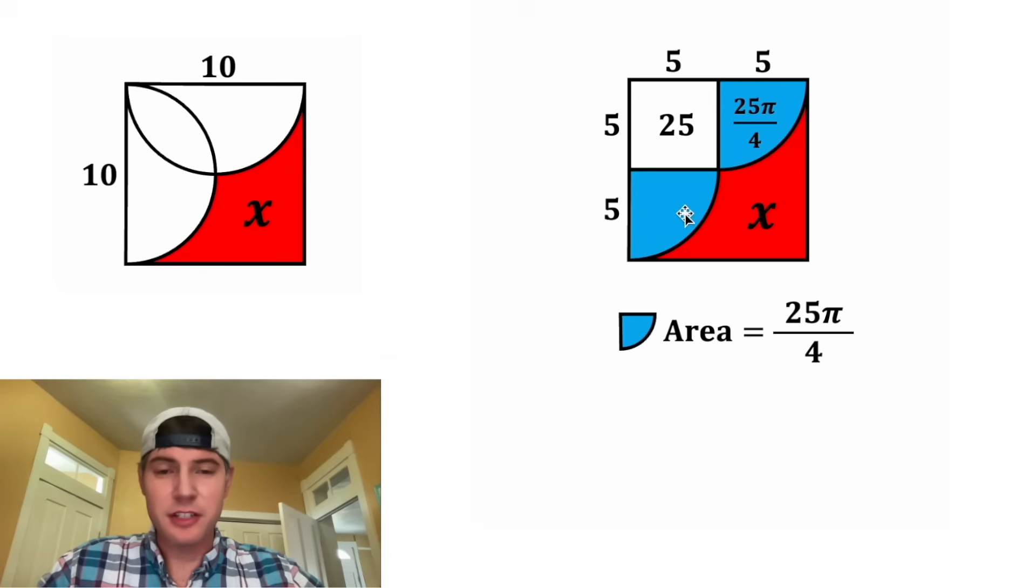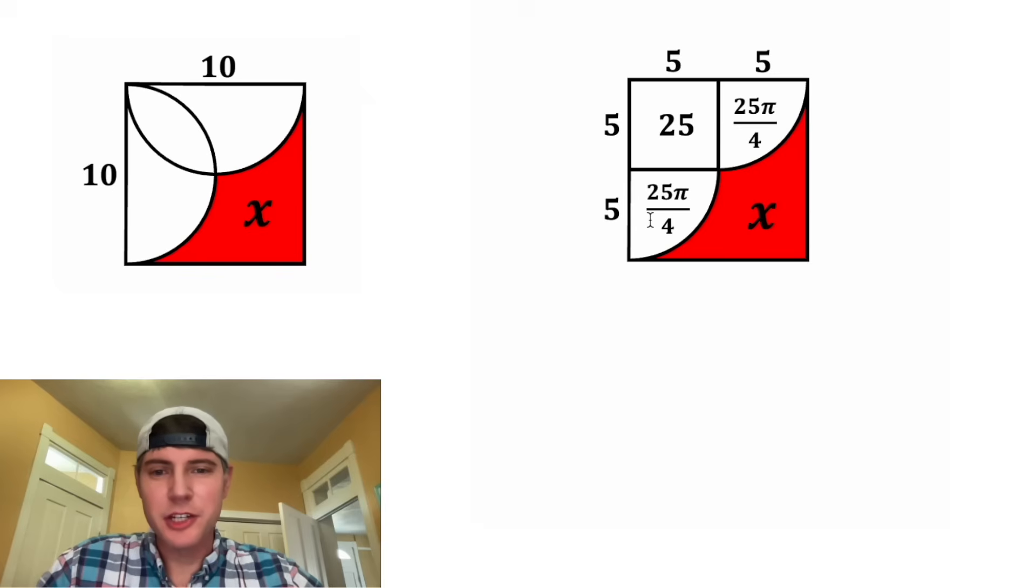And this quarter circle right here is the exact same, so it's also 25π over 4. And now we know the area of our white region.